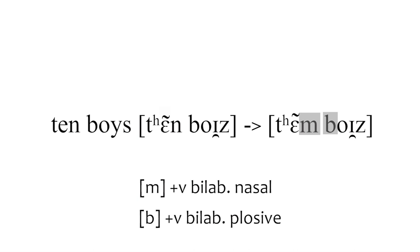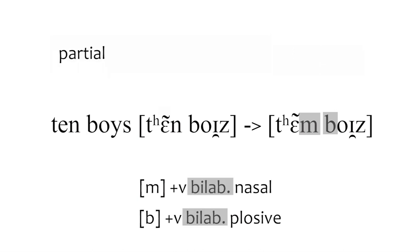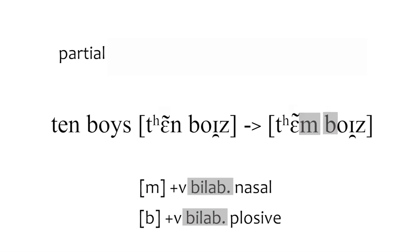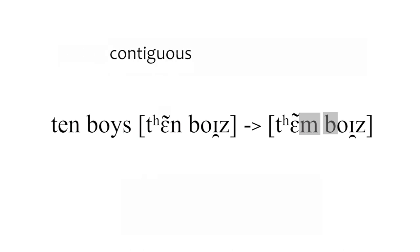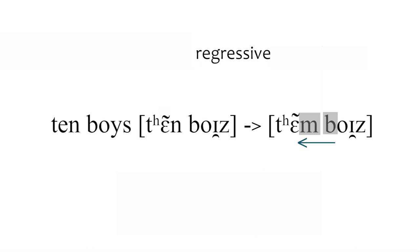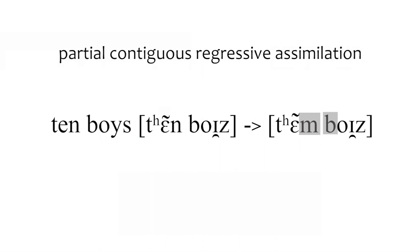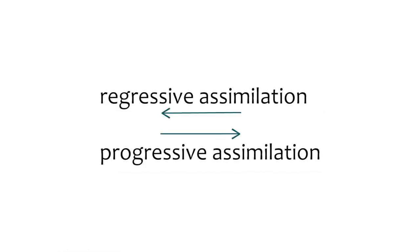So what kind of assimilation is this? It is partial — it would be total if 'n' became 'b', giving us 'teb boys', but that doesn't happen. It becomes 'tem boys', so it's partial assimilation. It is contiguous because it's between two adjacent sounds, and it is regressive because it is 'b' that influences the previous sound. The direction of influence is going backward — hence partial contiguous regressive assimilation.